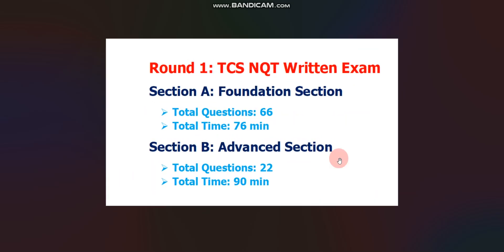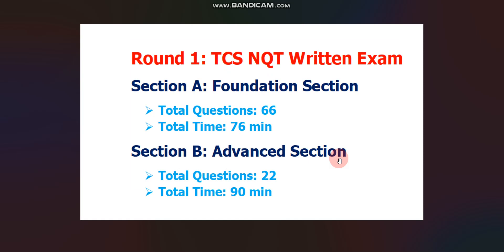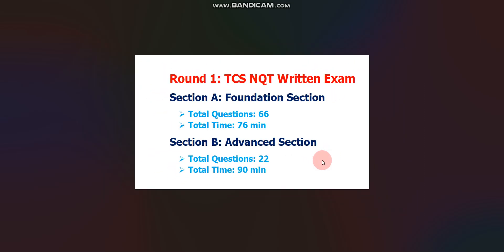Now let's discuss the exam pattern for round one, the TCS NQT written exam. There will be a total of two sections. Section one is the Foundation section, with 66 questions to solve in 76 minutes. Section two is the Advanced section, with 22 questions to solve in 90 minutes.